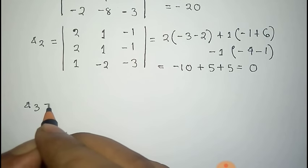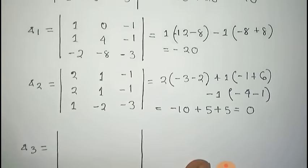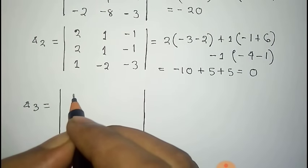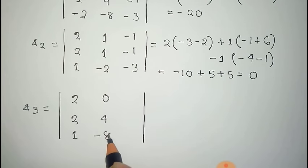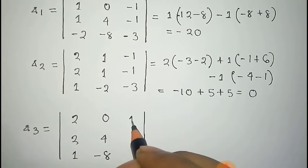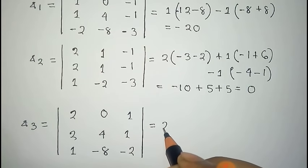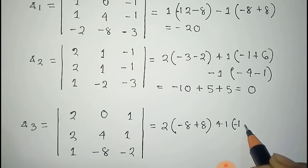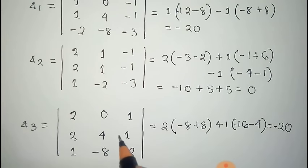For Δ3, the first and second columns are the same as delta: 2, 2, 1 and 0, 4, minus 8. But the third column is replaced with the constants 1, 1, minus 2. The value of this determinant is 2 into (minus 8 plus 8) plus 1 into (minus 16 minus 4), which equals minus 20. Thus we get Δ3 equal to minus 20.